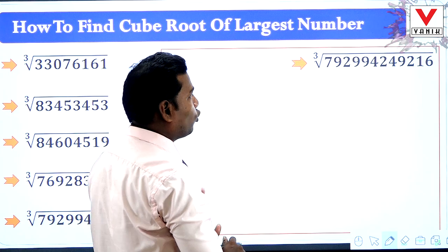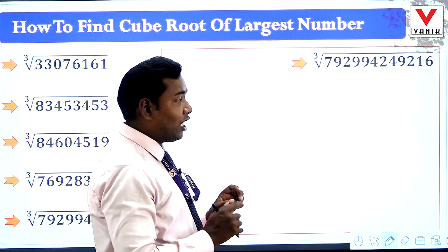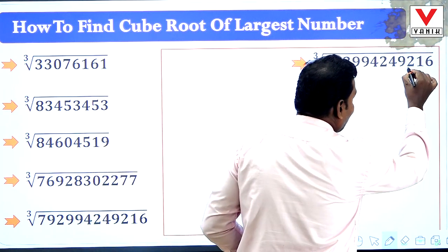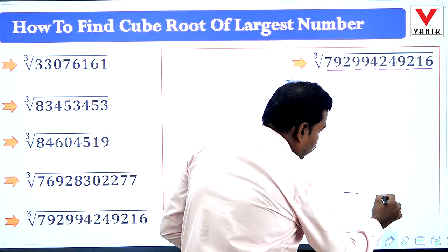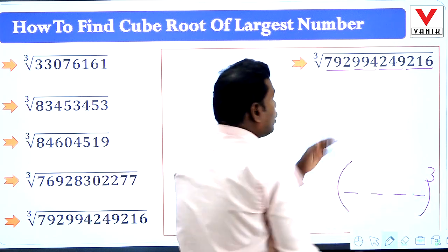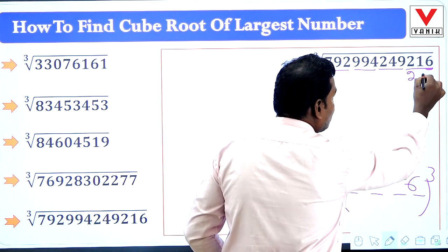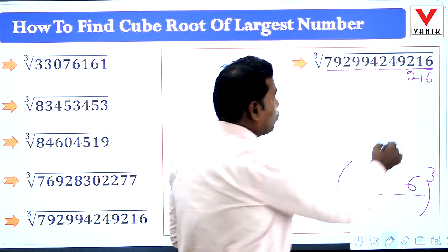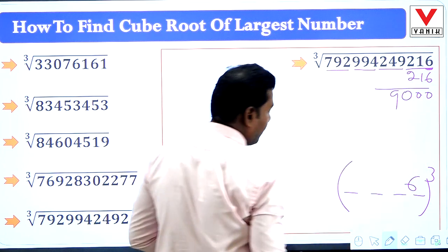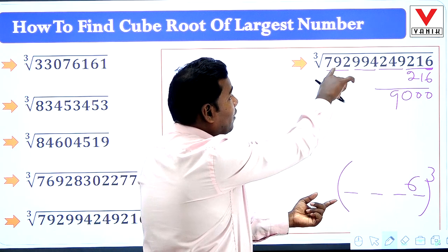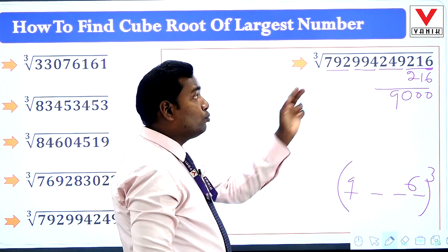Next number: 792994249216. We make groups: 216, 249, 994, and 792 — four groups, so this is a 4-digit number. The unit place digit is 6. Since 6 cube is 216, the last digit is 6. Subtracting 216: 216 minus 216 = 0, remainder 0. The first group is 792; 9 cube is 729 and 10 cube is 1000, which is more than 792, so the first digit is 9.